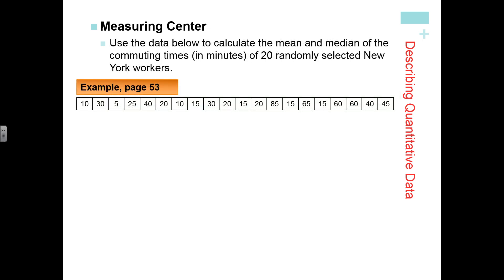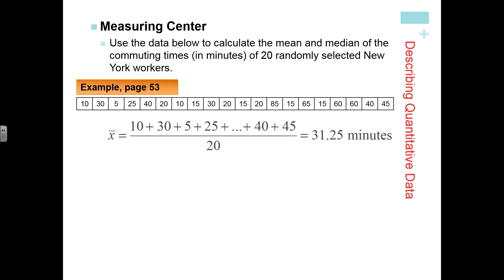Here's an example of the commuting times of 20 randomly selected New York workers. If I wanted to find the mean, I would add up all of my data values and then divide by the total, which is 20, to get a mean of 31.25. Notice this is a sample of New York workers, so we're using x-bar.